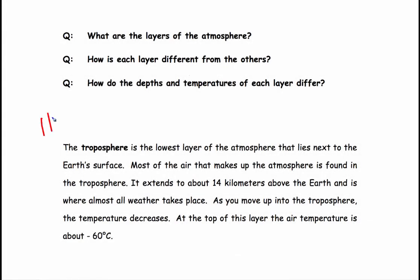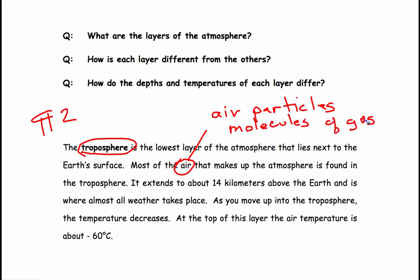Paragraph 2. The troposphere is the lowest layer of the atmosphere that lies next to Earth's surface. Most of the air that makes up the atmosphere is found in the troposphere. And what we're talking about here is most of the air particles, so like molecules of gases.